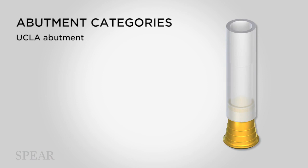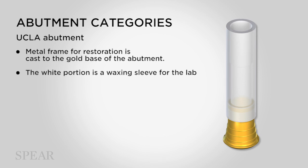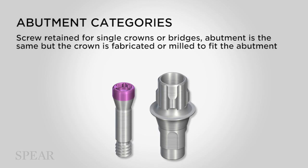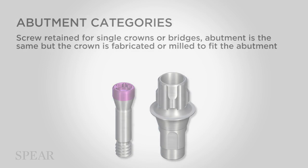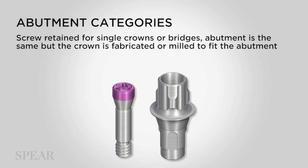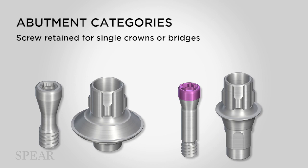The UCLA abutment is a custom abutment that allows a metal abutment to be waxed and then cast. The bottom of the abutment is a gold coping so that you can cast semi-precious metal to it. The white top part is a waxing sleeve that allows screw access to be left open. These are examples of UCLA abutments on top of bone-level implants. Screw-retained crowns and bridges use abutments that work the same way as cementable custom abutments — the difference is that instead of fabricating a chimney cemented to the abutment, the crown or bridge is milled to fit directly on the abutment and then cemented. There's a hole through the center of the restoration for screw access, which is then filled with composite. They can be used for both tissue-level and bone-level implants.